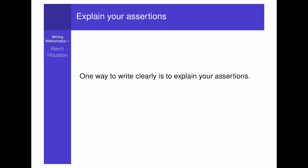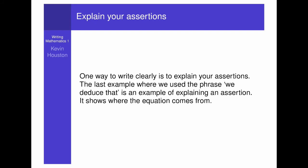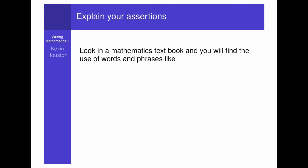One way to write clearly is to explain your assertions. The last example, where we use the phrase, we deduce that, is an example of explaining an assertion. It shows where the equation comes from. Look in a mathematics textbook and you will find the use of the words and phrases like as, because, since, due to, in view of, from, using, we have. We can use all these.